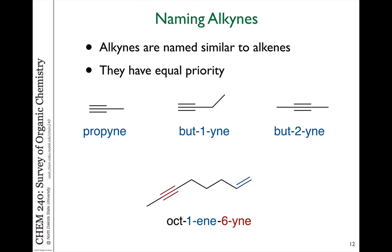In the next video, I'm going to talk about some ambiguities in our stereochemistry naming system when we use cis and trans, and talk about another naming system that we use to indicate stereochemistry of double bonds.